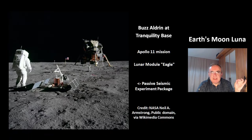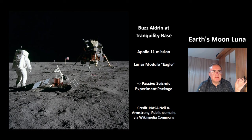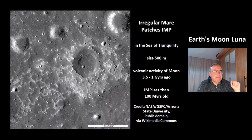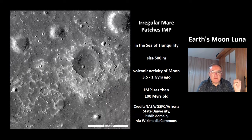This is Buzz Aldrin at Tranquility Base from the Apollo 11 mission, next to the Lunar Module Eagle. In the foreground you can see the Passive Seismic Experiment Package. Also shown are IMPs — Irregular Mare Patches in the Sea of Tranquility — with a size of about 500 meters.